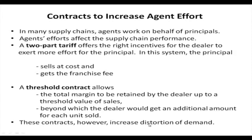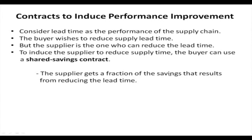The threshold contract increases distortion of demand. Lastly, contracts to induce performance improvement are used when lead time is the supply chain performance criterion. The buyer wants to reduce supply lead time, but only the supplier can achieve that. To induce the supplier to reduce supply time, the buyer can use a shared savings contract, where the supplier gets a fraction of the savings that result from reduced lead time.